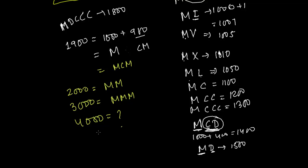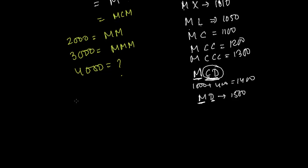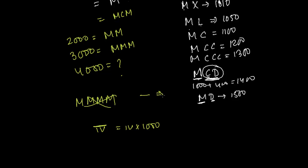Writing four M's consecutively is wrong — you cannot write four consecutive M's. So for 4000 we use a different rule: we write IV and place a bar over it. The bar means multiply by 1000. IV is 4, so IV-with-bar equals 4 times 1000, which is 4000.